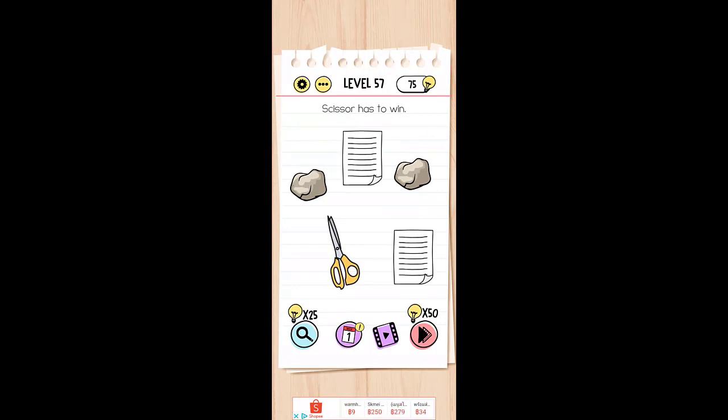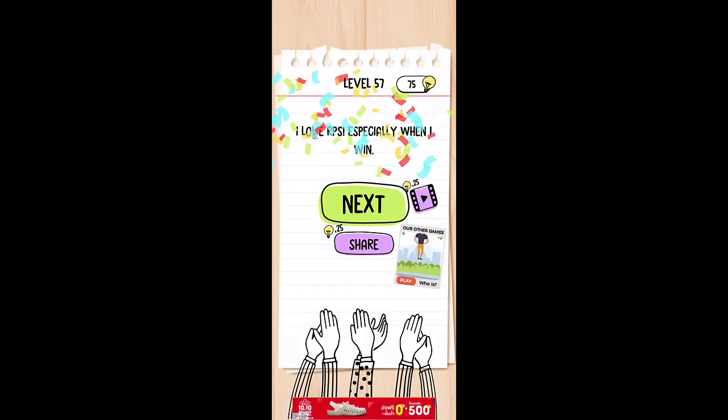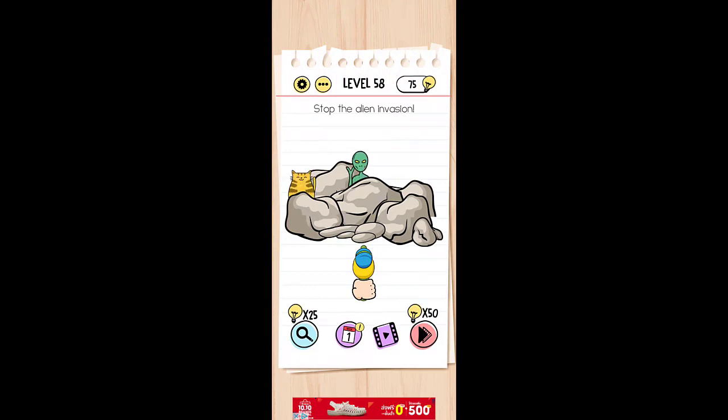Caesar has to win, so you should put here in Caesar. Level 58, stop the alien invasion. Just hit the aliens only, just tap on the alien.